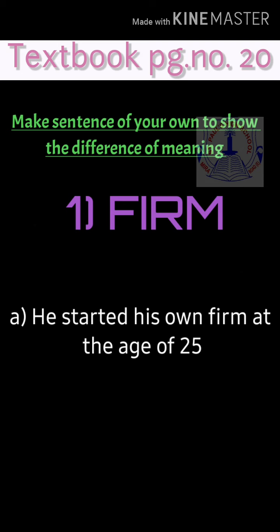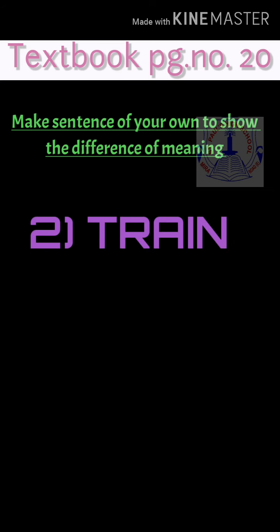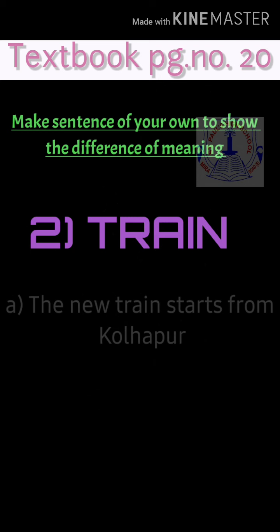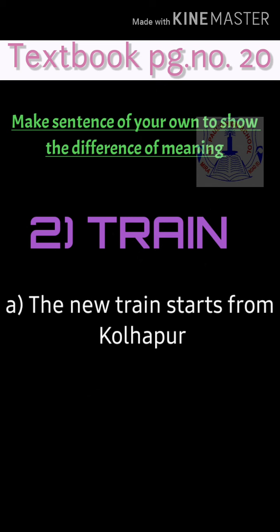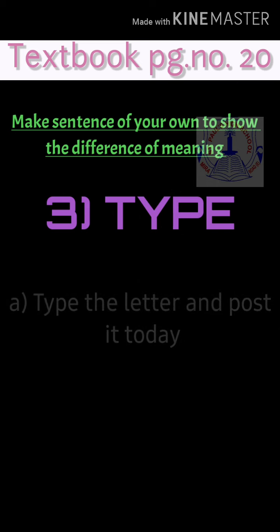Textbook exercise, page number 20: make sentences to show differences in meanings of homographs. First, 'firm': means a company — 'He started his own firm at the age of 25'; also means to be strict — 'The teacher decided to be firm with the naughty kids.' Second, 'train': means a train engine — 'The new train starts from Kolhapur'; also to train someone — 'I train students to communicate with confidence.'